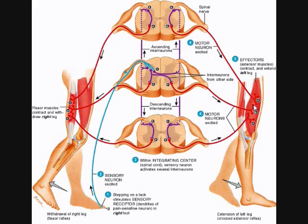The crossed extensor reflex is a contralateral, polysynaptic, intersegmental reflex arc — because it happens on the opposite side of your body, it uses multiple synapses, and it uses multiple segments of the spinal cord.